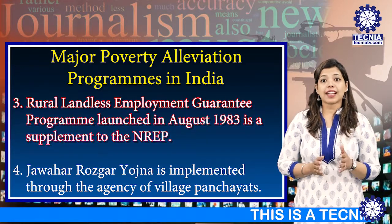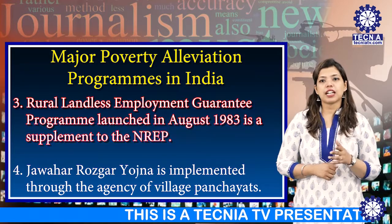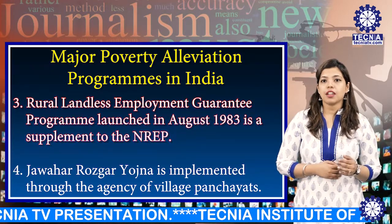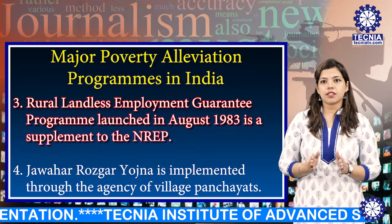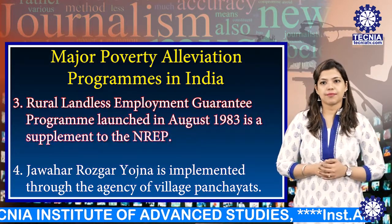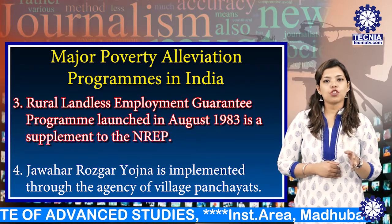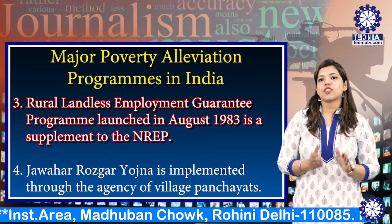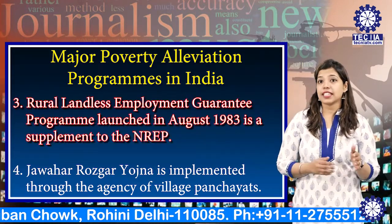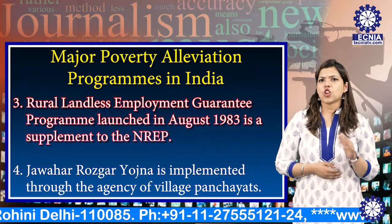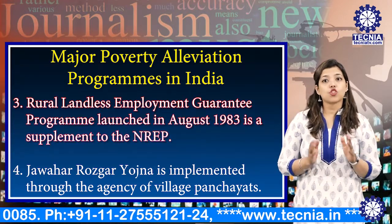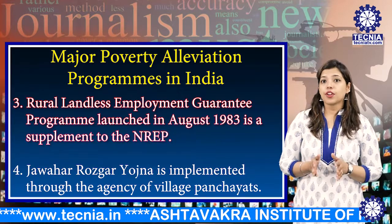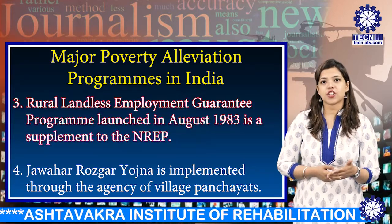The third program, Rural Landless Employment Guarantee Programme, was launched in August 1983 as a supplement to the NREP. Under the program, the wages of landless labour are paid partly in money and partly in food grains. The projects under the program are undertaken during days when there is not much to do on the farms. The idea is that at least one member from each landless family should be provided with 100 days of gainful employment.